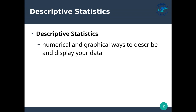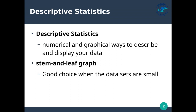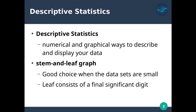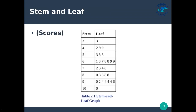One of the easiest forms of descriptive statistics are stem and leaf graphs. This is a very good choice whenever the data sets are small, and they can give you insights into the data. You can do some comparative studies with them. The leaf consists of a final significant digit, and here is an example. In this case we have scores, probably on an exam, and the stem is the most significant digit — here we have 3, 4, 5 — which represents 30, 40, 50.